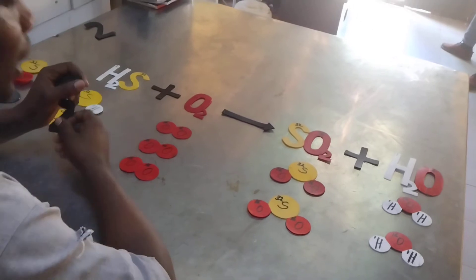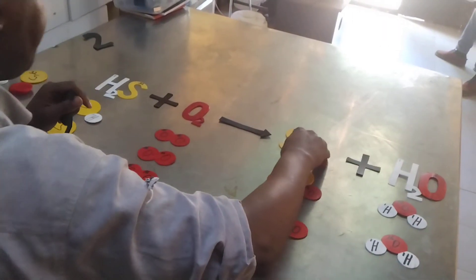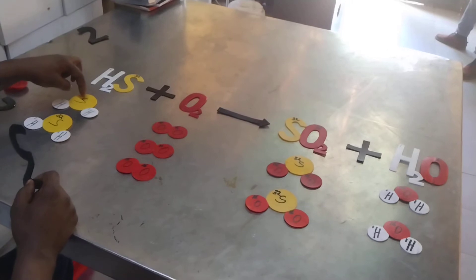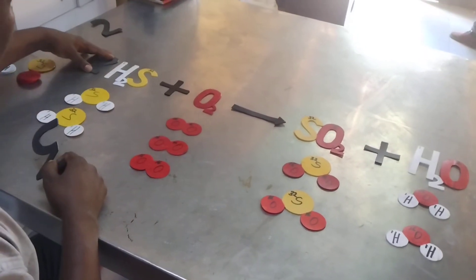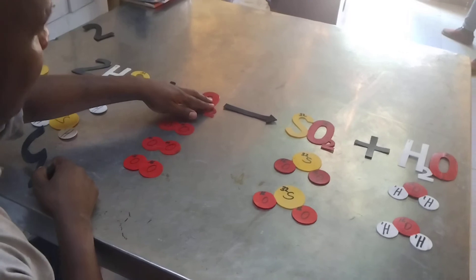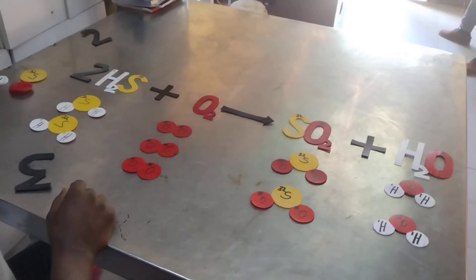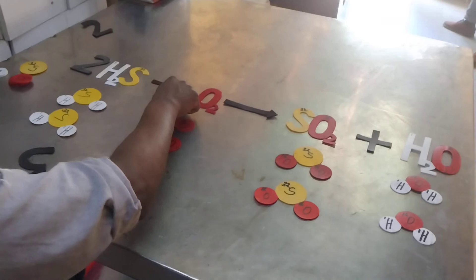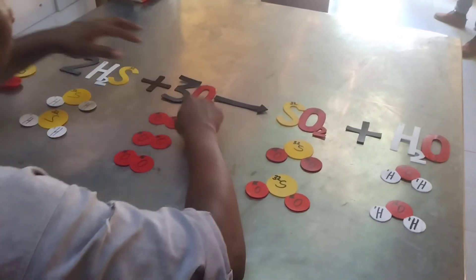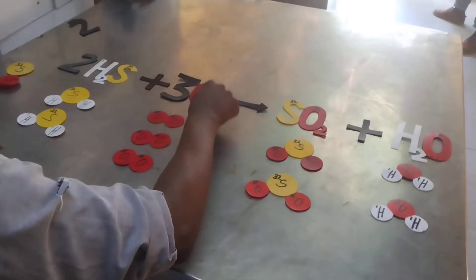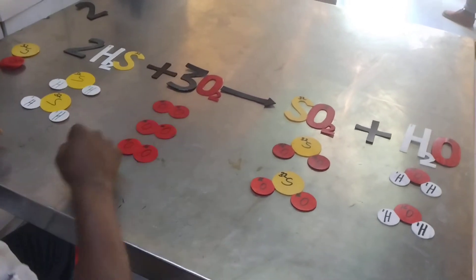Now we add our coefficients to the equation. We have two molecules of hydrogen sulfide, so we put a two there. We have three molecules of oxygen, so we put a three there — three times two equals six oxygen atoms total.